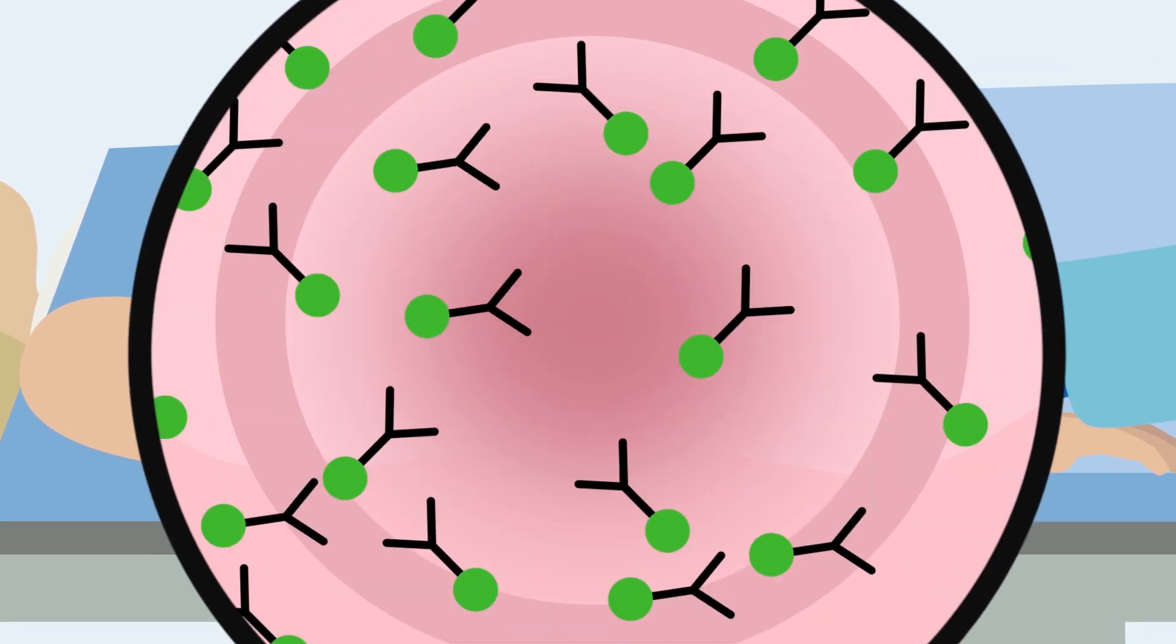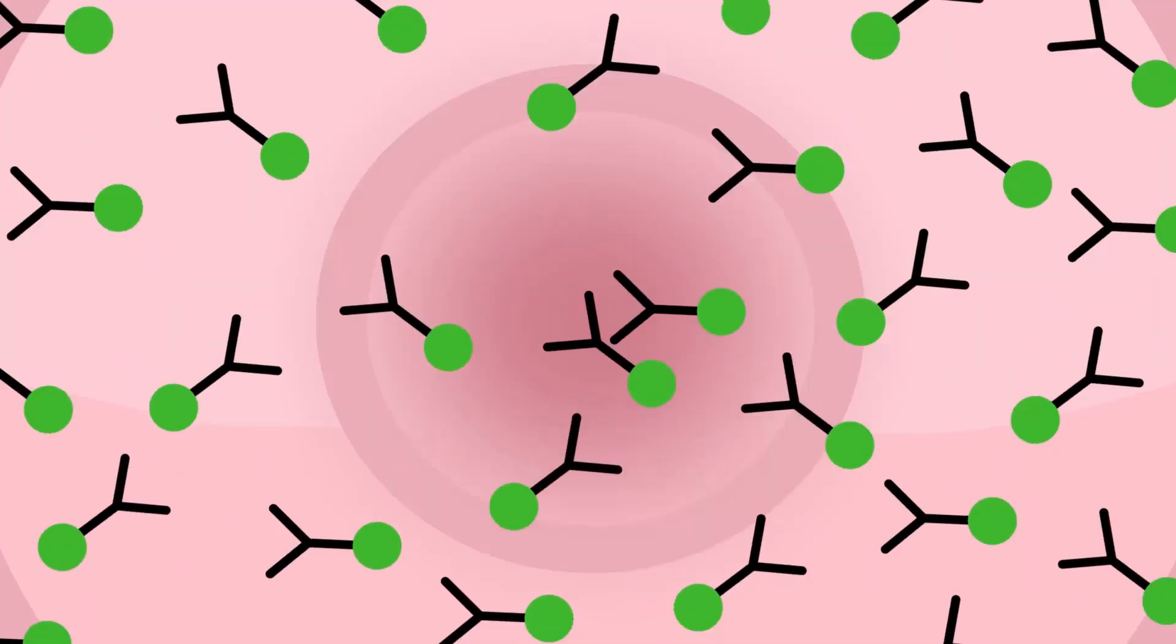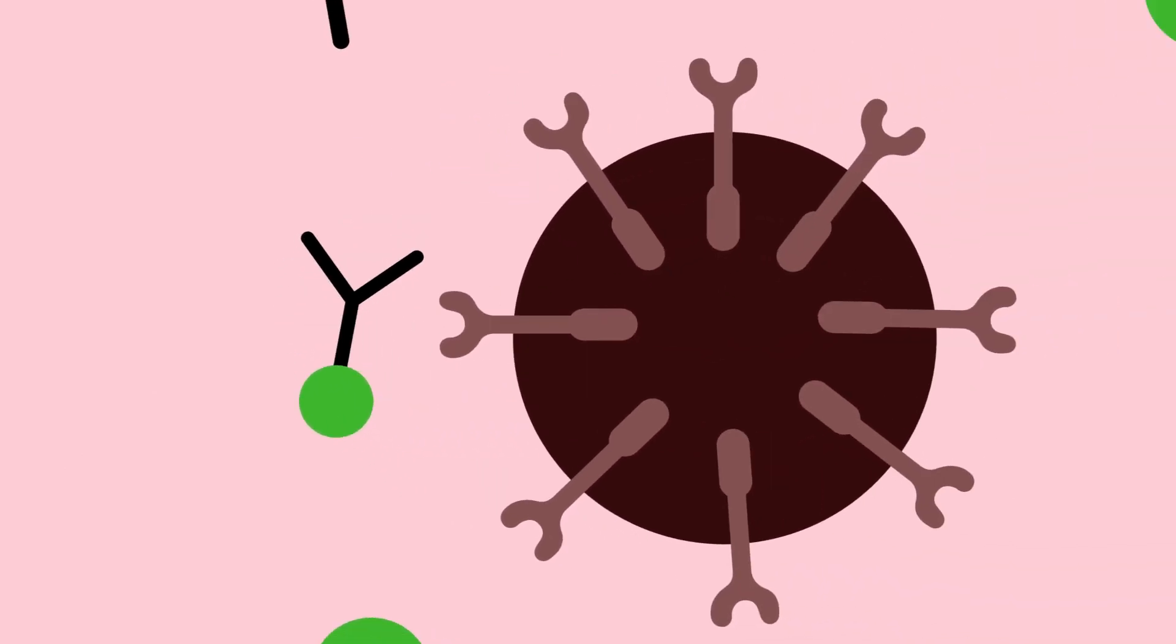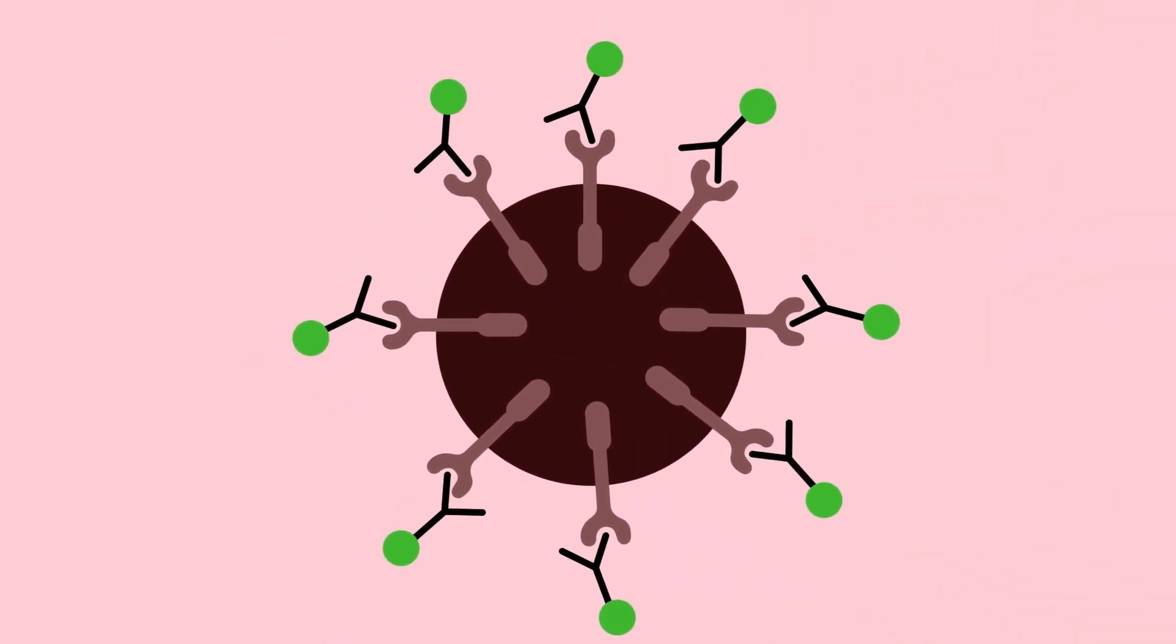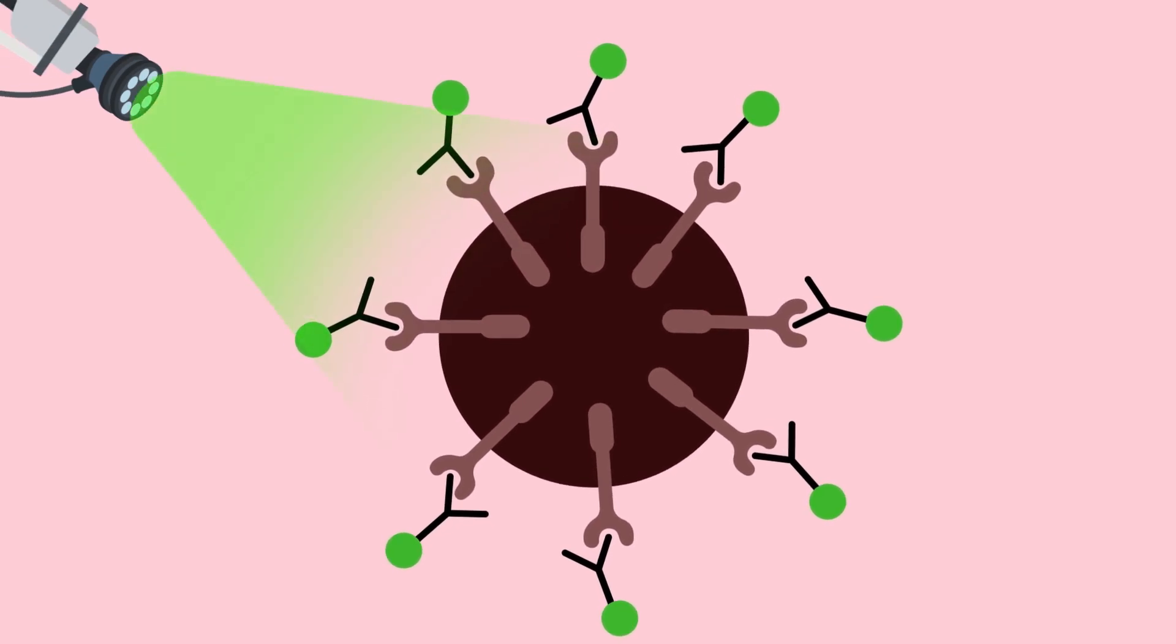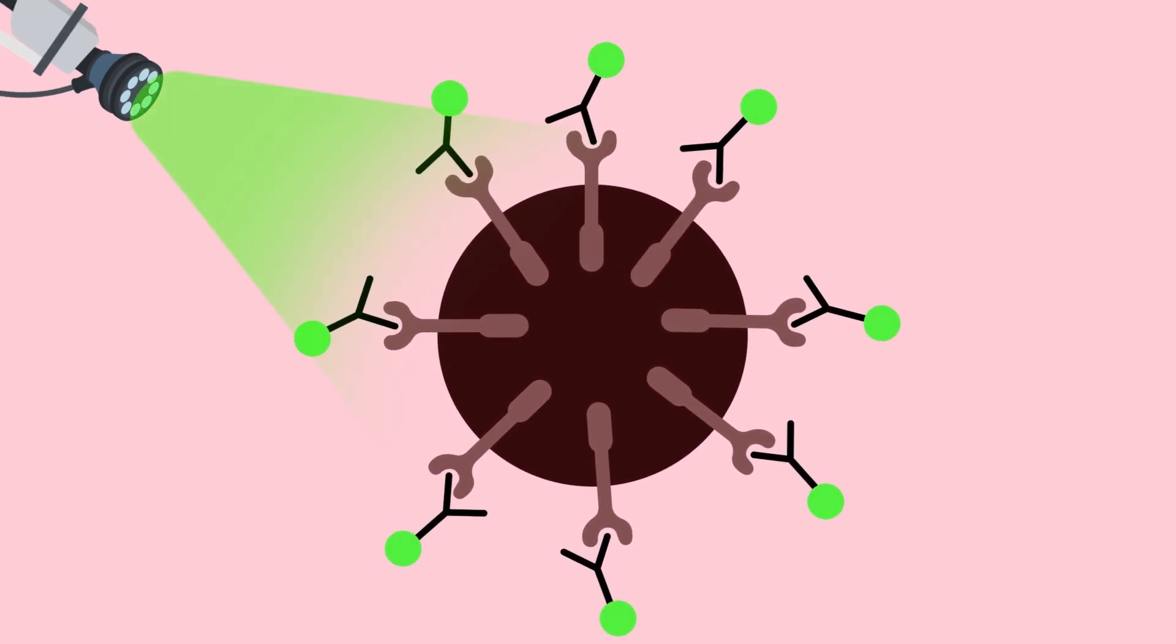Image-guided surgery uses tracers consisting of antibodies or peptides coupled with fluorescent dyes which bind to proteins like the F-receptors. When the tracer is excited by near-infrared light, it emits fluorescent light, which can be detected using dedicated camera systems.